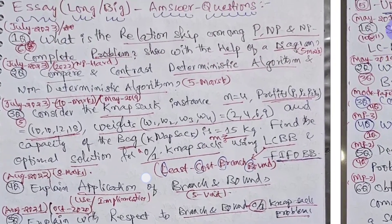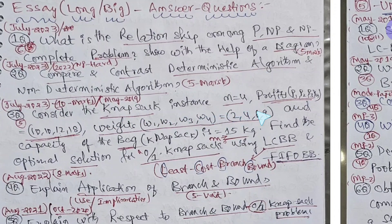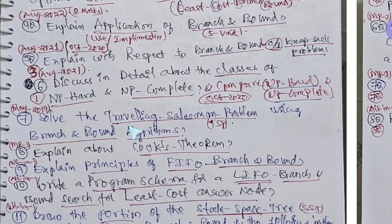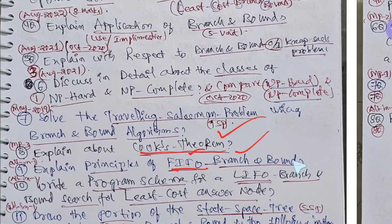Explain applications of branch and bound. I already told you every unit chapter title you need to prepare very well, definition and introduction of every chapter and its applications. Explain with respect to branch and bound 0 by 1 knapsack problem. This question was asked in August 2021, October 2020, and same question is also same. Discuss in detail about the class of NP hard and NP complete. Solve the traveling salesperson problem TSP using branch and bound algorithm. Explain about Cook's theorem. This was suited recently with all scientist named algorithms I have covered.